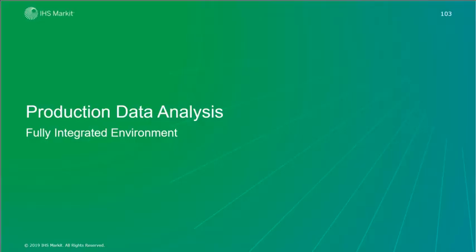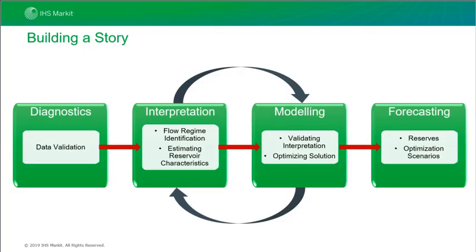Let's first take a look at some diagnostics in production data analysis using type curves. When we're analysing data in order to get reliable results, what we recommend doing is building a story. We start off with diagnostics, which is data validation and reservoir signal extraction using data charts and type curves. We would recommend doing this right at the beginning so you know the kind of data that you're working with. Next up we have interpretation, which involves flow regime identification, estimating reservoir characteristics and identifying important system parameters, and also trying to qualify any uncertainty.